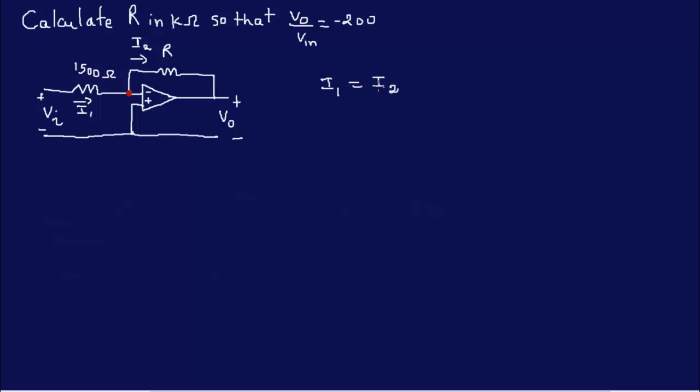Now what's i1? i1 is Vi over 1500 because the potential difference is Vi here in this case. So we have Vi over, let's call it i1 over Vn I guess because of this relationship, over 1500.